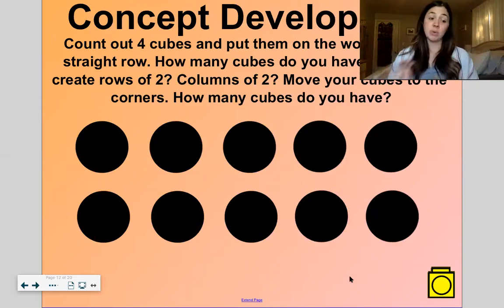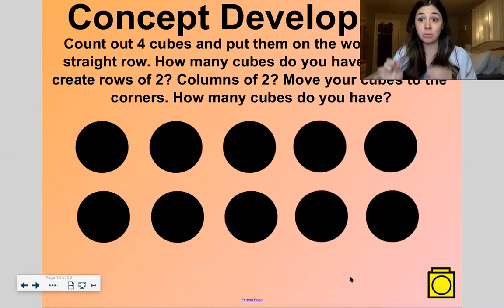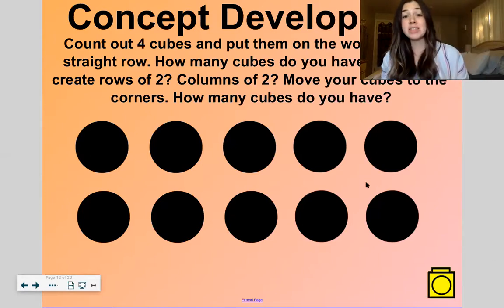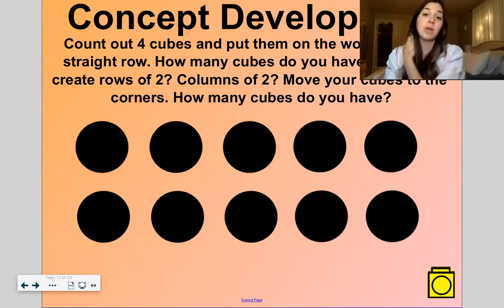Okay so now this is where if you have something small to count with or sort with get it out. I'm going to use some cubes and this mat and this mat is kind of like a five frame like a double five frame. So there's five dots on top and five dots on the bottom. We're not going to move these dots around or anything. These are just like our counting mat.